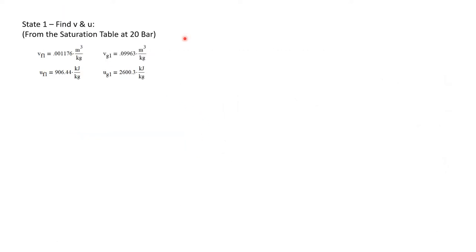Let's begin by finding the properties of specific volume and internal energy at state 1. We will find those in the saturation table at 20 bar. The v_f and v_g are given and the u_f and u_g are given in the table. I put a subscript of 1 here on the f and g to indicate that this is for state 1. We're going to have state 2 values coming up later and I want to distinguish between them.